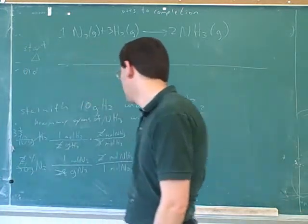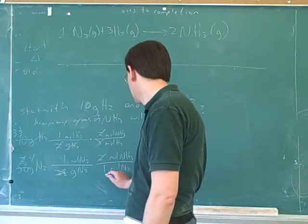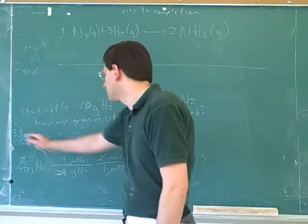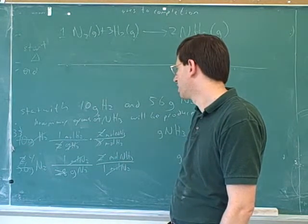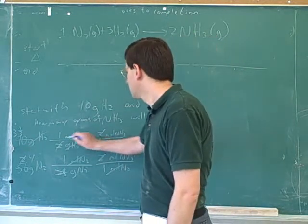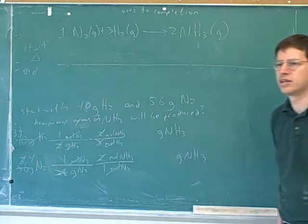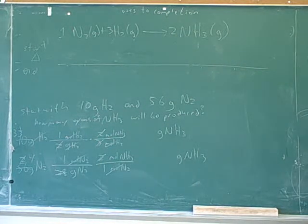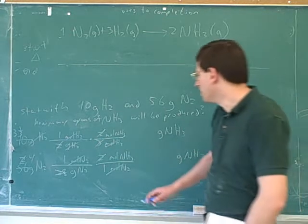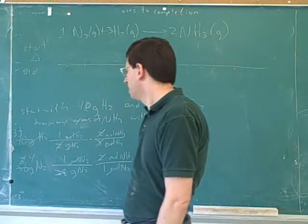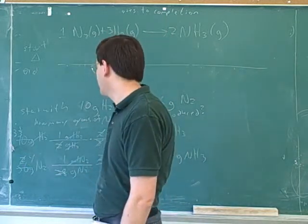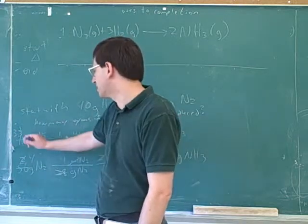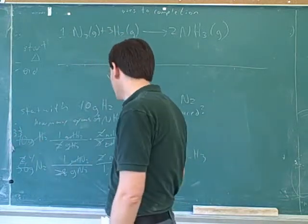So what units are we in? Moles — 4 moles of NH₃ from nitrogen, and 3 and a third moles of NH₃ from hydrogen. The limiting reagent is the hydrogen, because we have enough nitrogen to make 4 moles of product, but we only have enough hydrogen to make 3 and a third moles of product. So hydrogen is going to have to be our limiting reagent.